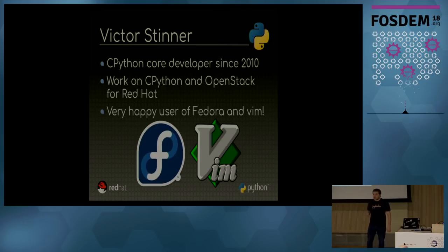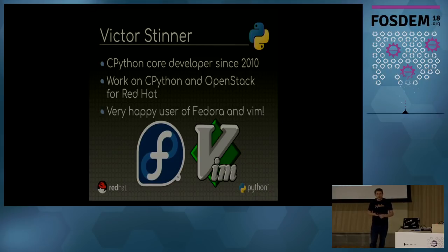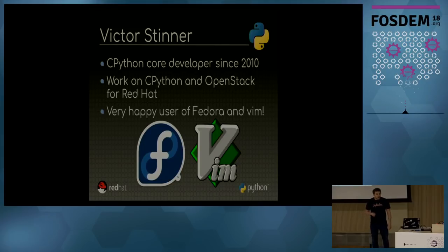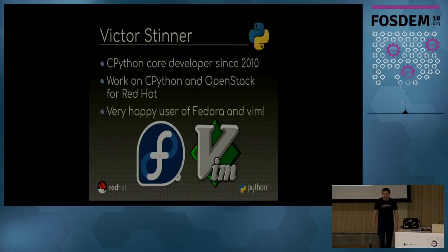What does it mean to work on CPython? It means, for example, to maintain the CI, to fix regressions, to take care of the bug tracker, to help review patches, to help debug some issues, but also to take care of the mailing list, to answer questions, to follow some PEPs. In fact, there are many things that should be done in Python. I'm working for CPython, but also on OpenStack for Red Hat, and I am a very happy Vim and Fedora user.